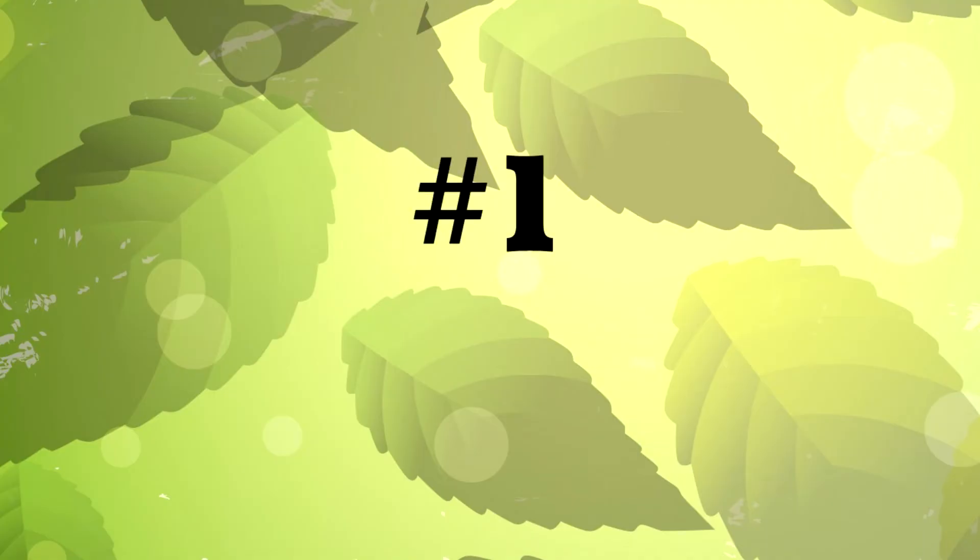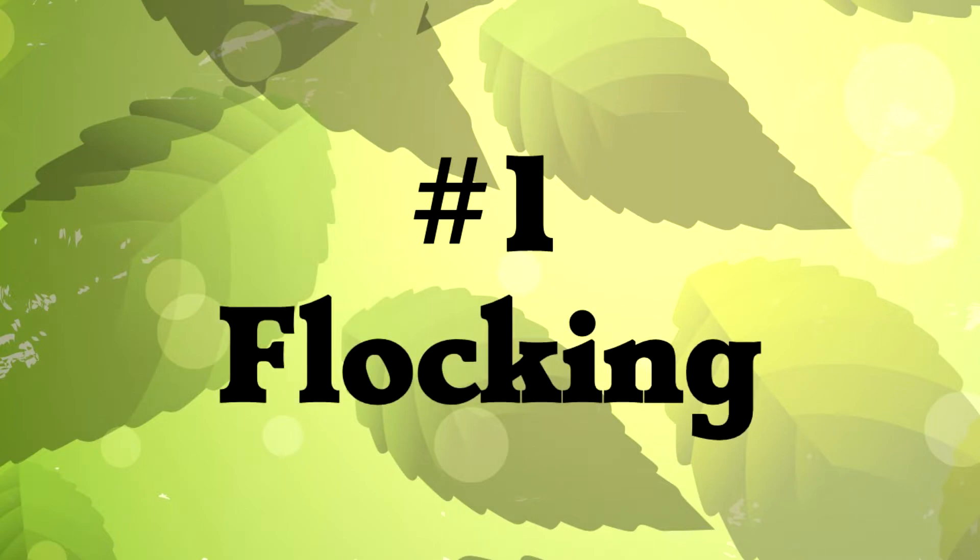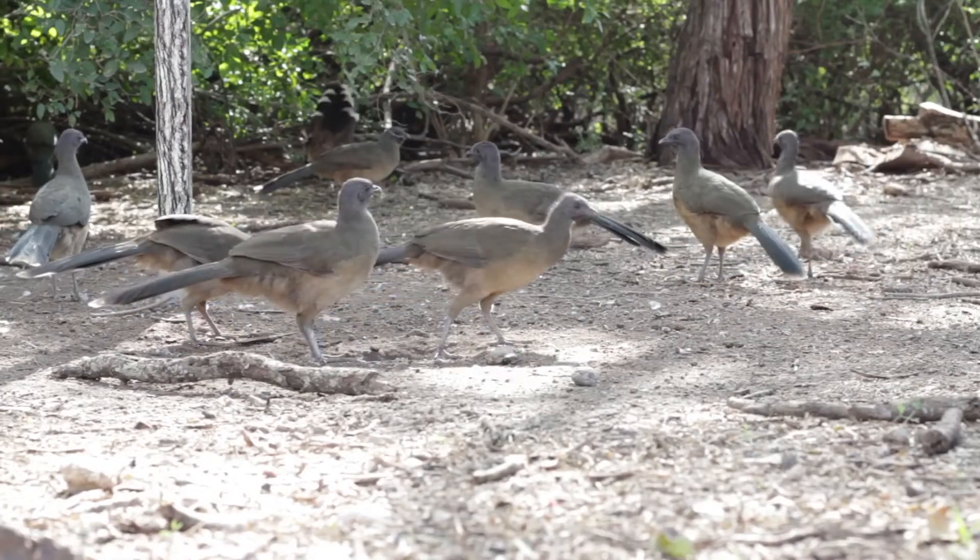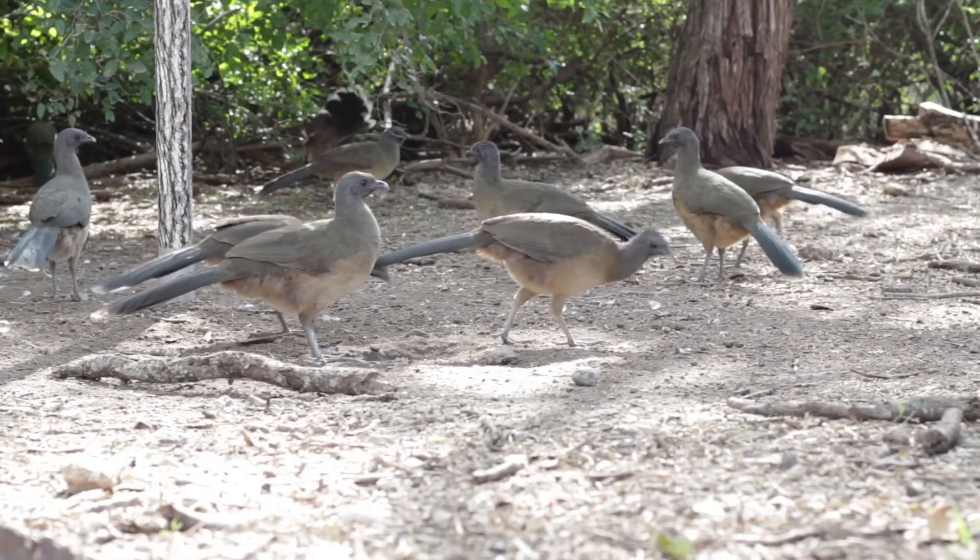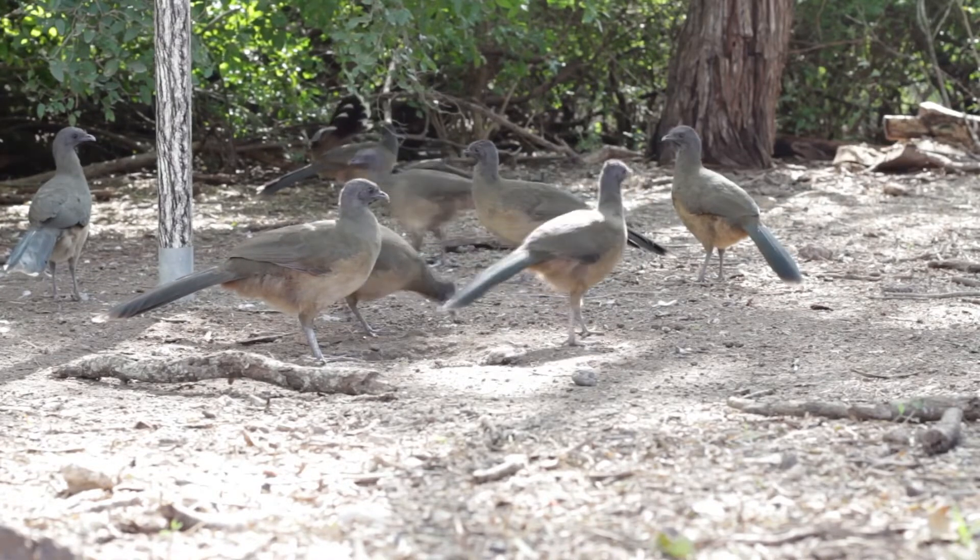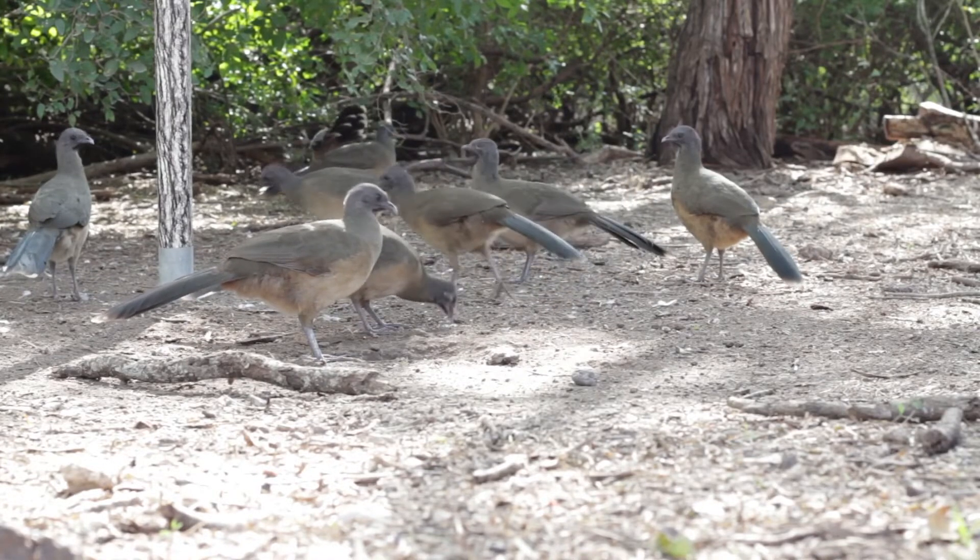And the most important way that birds have to avoid being eaten is flocking. Flocking is staying together with members of the same species, and it helps in so many different ways. For example, if you have lots of members of your species present, all of them can keep an eye out for predators, and if any of them sees a predator, they can sound the alarm. So having lots of eyes looking out for things that are dangerous is very, very helpful.